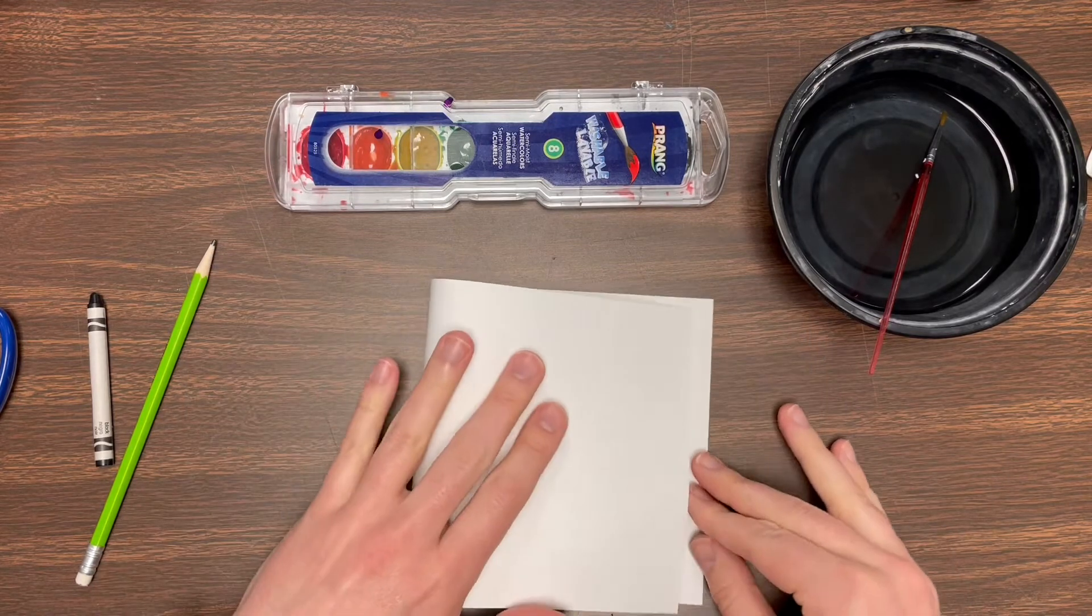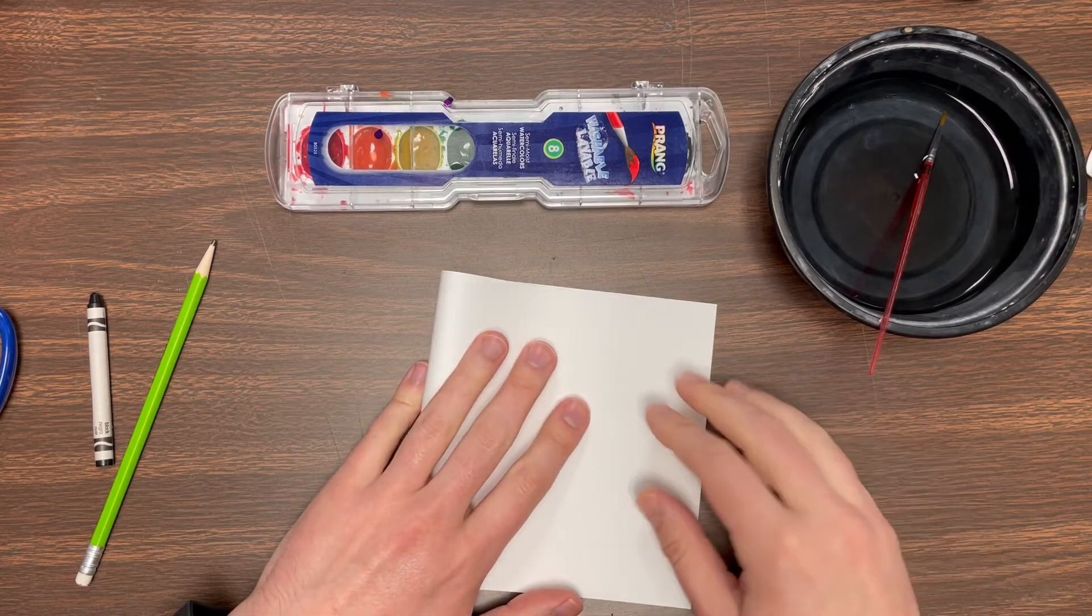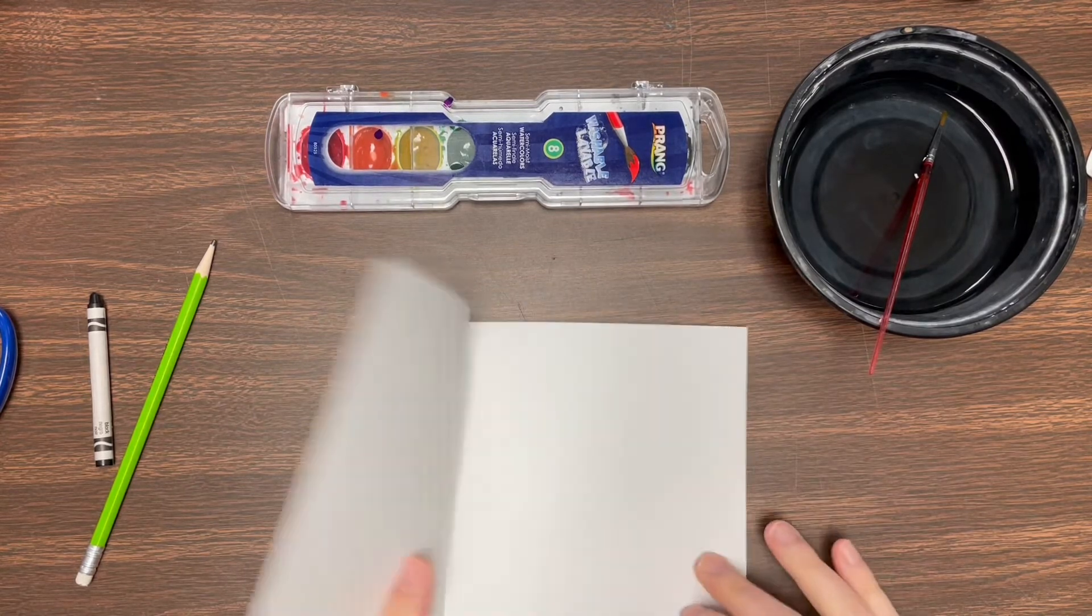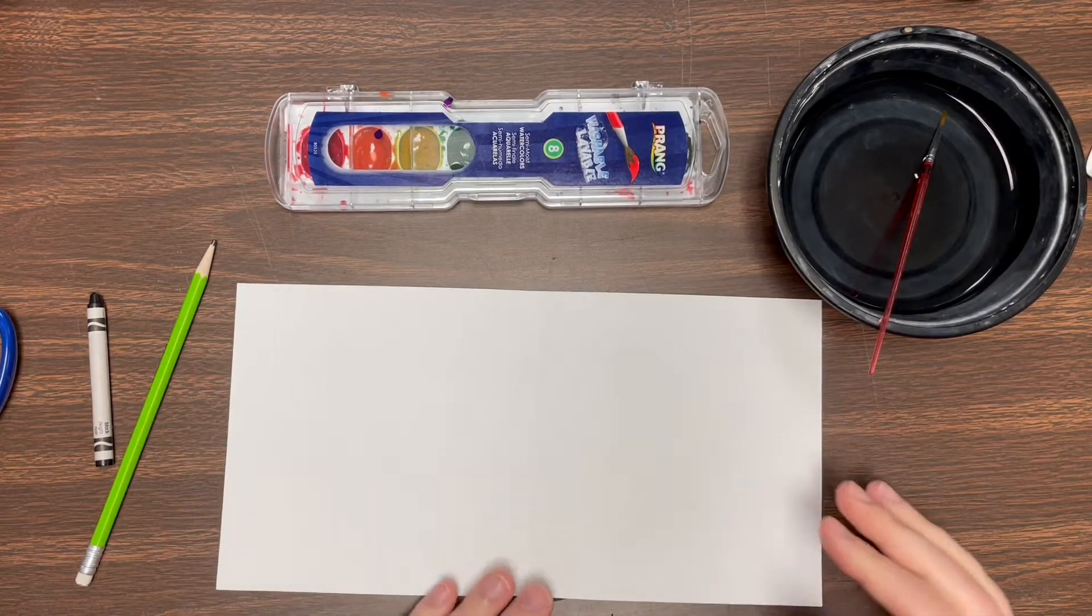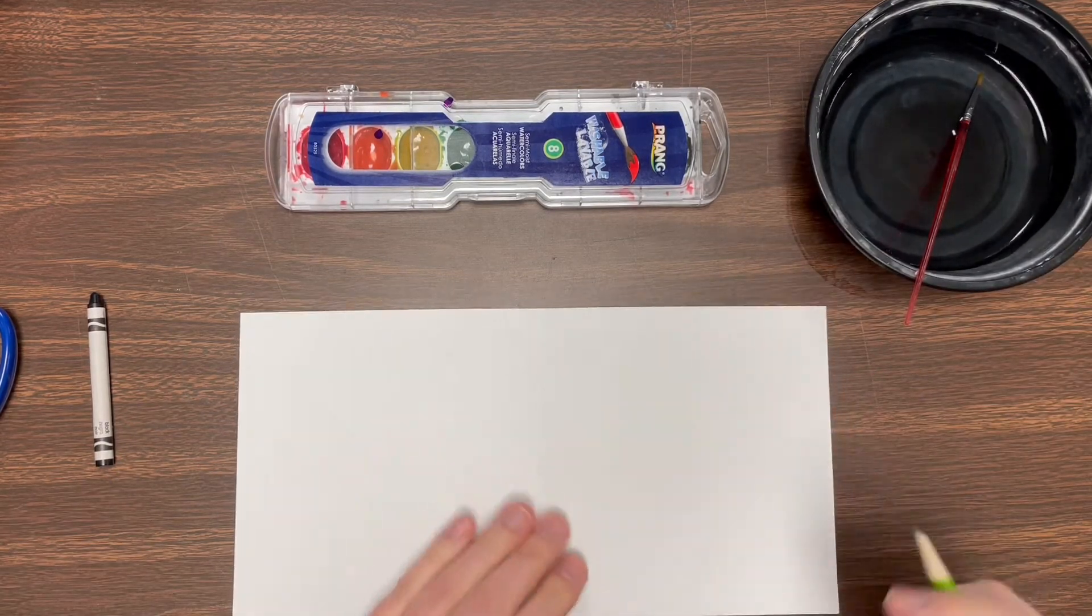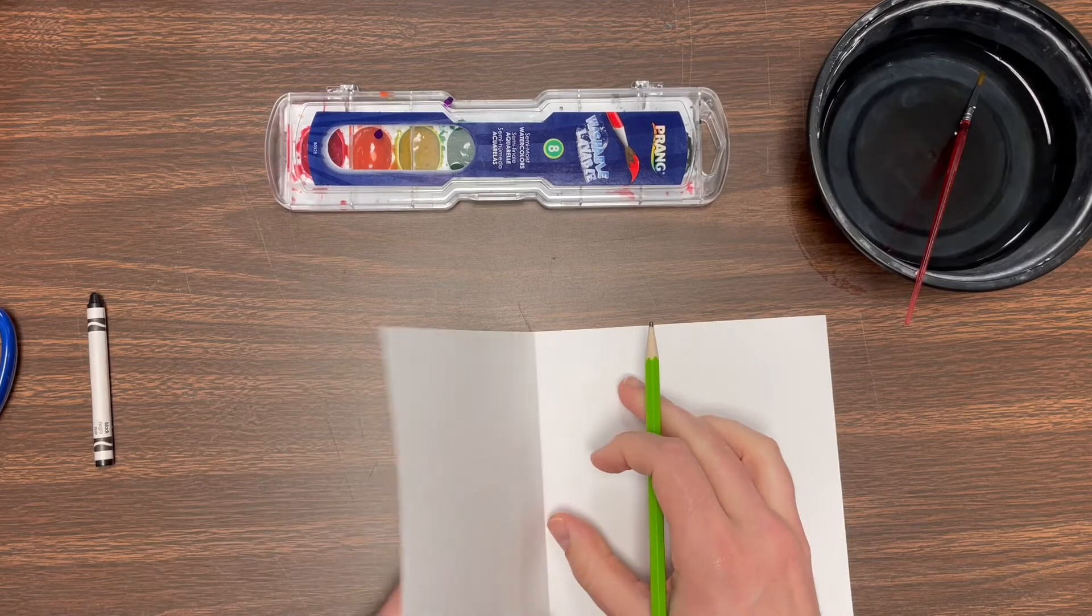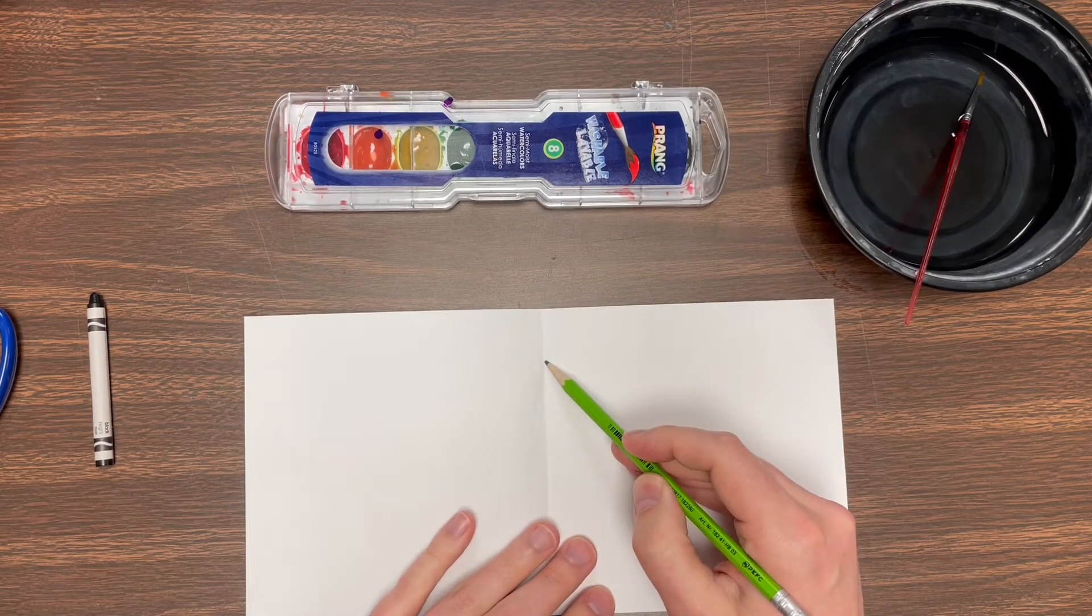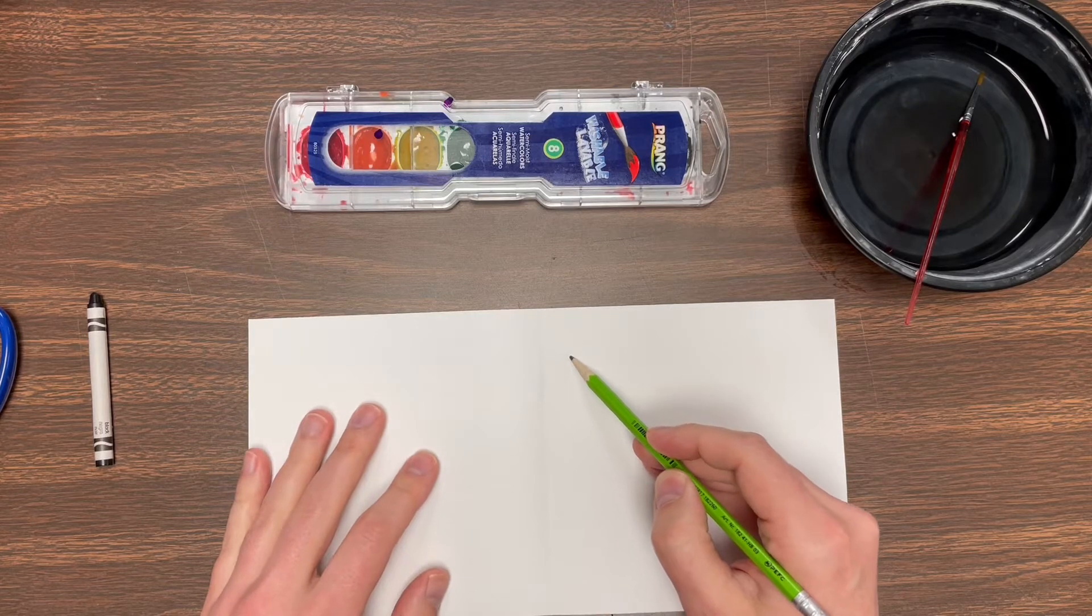I'm gonna take my paper and fold it in half. Today I'm only gonna draw half of my butterfly and I'm gonna show you how to turn it from half into a whole butterfly. I'm gonna start by drawing it in pencil very lightly. If I'm only drawing half of the butterfly I'm only gonna draw half of its body and one wing.